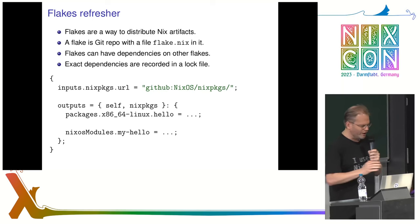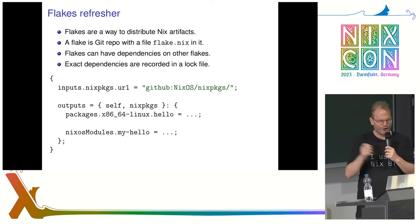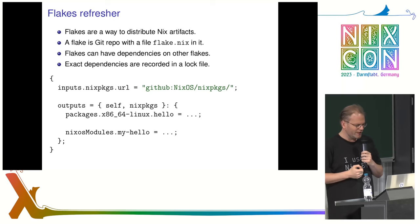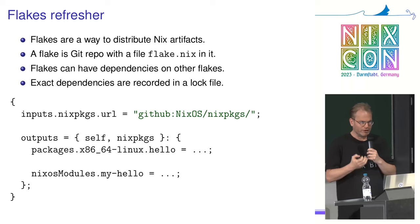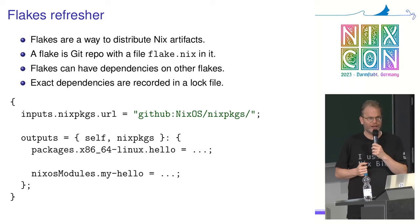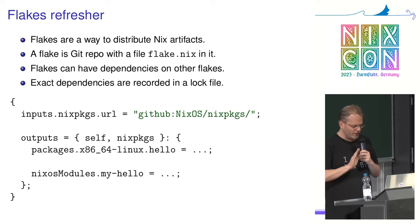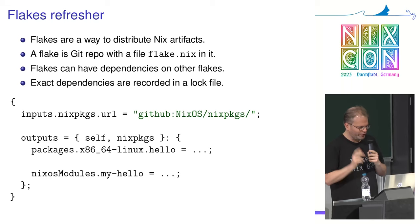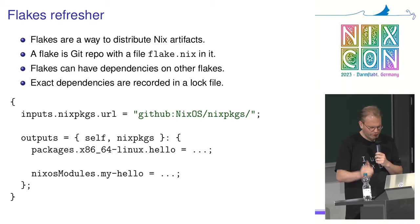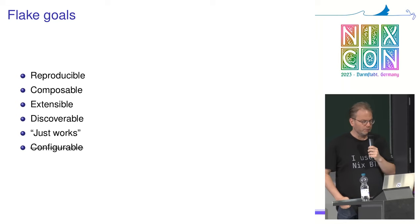A quick flake refresher: flakes are basically a package manager for your package manager - like Cargo or npm for Nix, a way to package Nix expressions. A flake is just a git repo with a flake.nix file in it. Flakes can have dependencies on other flakes, they can be locked to ensure reproducibility, and flakes can have arbitrary so-called outputs - things like packages, NixOS modules, CI jobs, or development shells. The flake file format doesn't specify any flake outputs; the outputs are just an arbitrary attribute set of values.